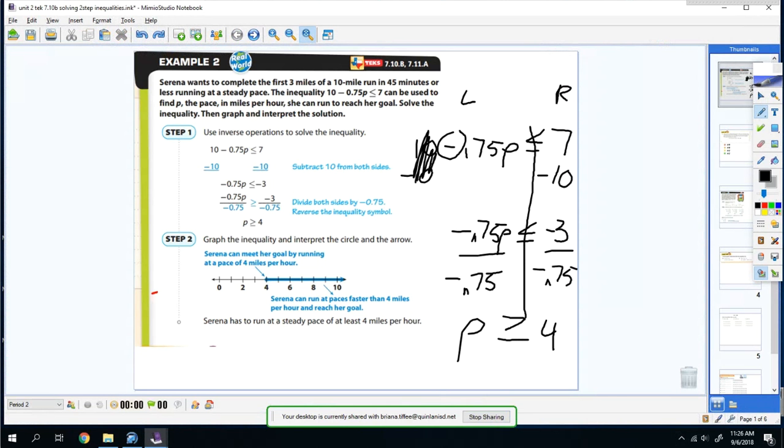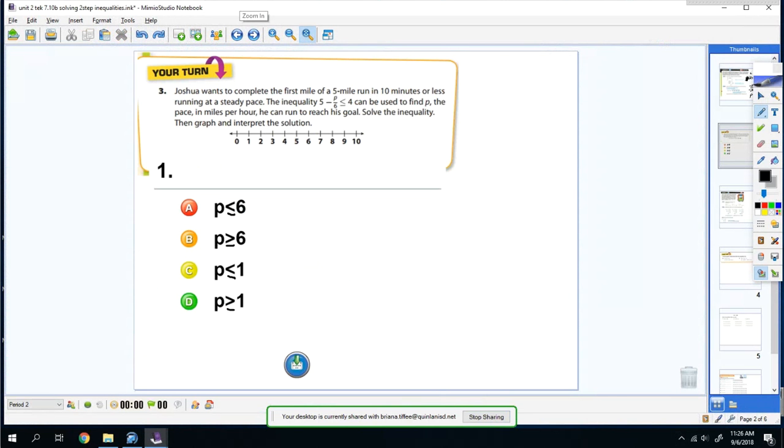Okay? That's the only thing different. So I want you to try one. So you have a word problem here. It says, Joshua wants to complete the first mile of a 5-mile run in 10 minutes or less. Running at a steady pace, the inequality 5 minus p over 6 is less than or equal to 4 can be used to find p. So that's your inequality, and I want you to solve that. So I want you to pause the video and solve this, please.